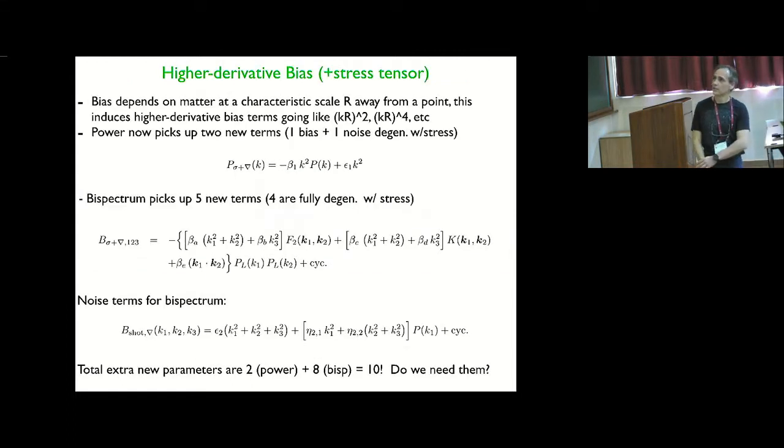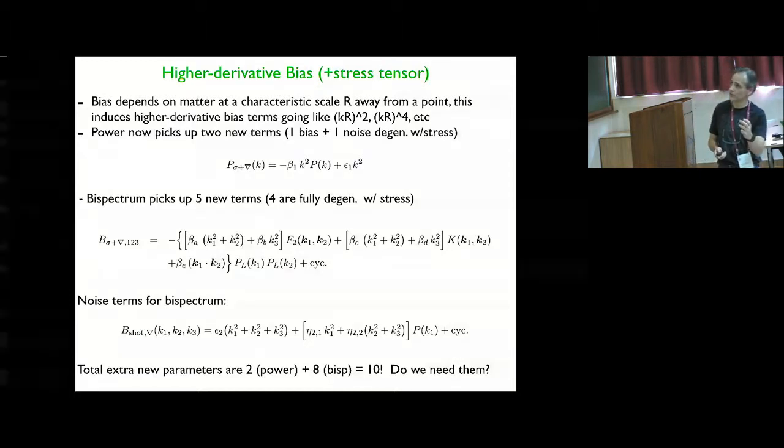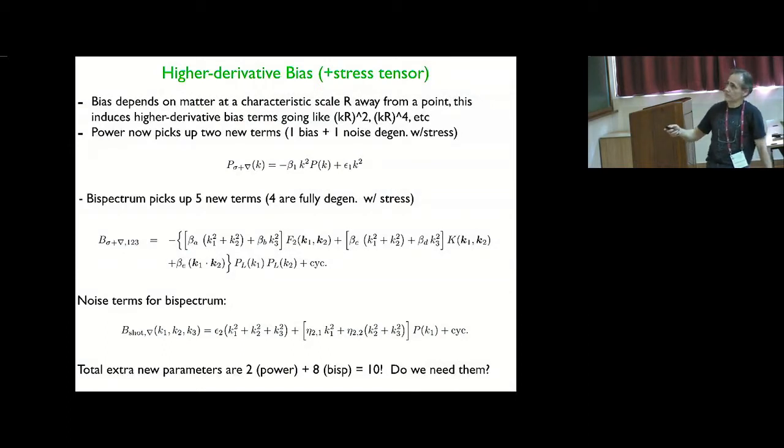Now, in the past, people have argued that you don't need these loops. There are a few papers that say you just forget about the loops and add what is known as higher derivative bias, which are terms that go as k-square. Those terms can be generated by the fact that the bias doesn't depend on the density at a particular point in space. At the same point, you are calculating the galaxies, but on some scale r away from it because you are collecting matter from some radius r.